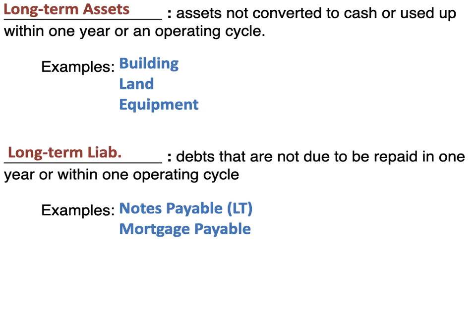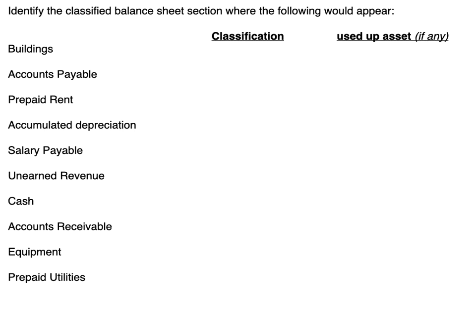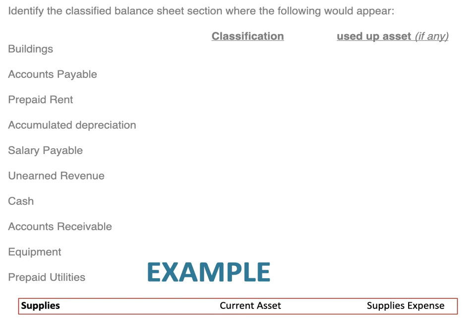Let's look at some more examples and see if we can classify them. I'm giving you a list of things and I want you to tell me the classification — is it a current asset, a long-term asset, a current liability, or a long-term liability? And if it's an asset that gets used up, tell me what it's called when it's used up. For example, supplies would be classified as a current asset, and when it gets used up it's called supplies expense. Go ahead and pause the video now and classify each one as either a current asset, long-term asset, current liability, or long-term liability, and if it's an asset, tell me what it's called when it gets used up. Press pause, complete it, and come back in a few minutes.